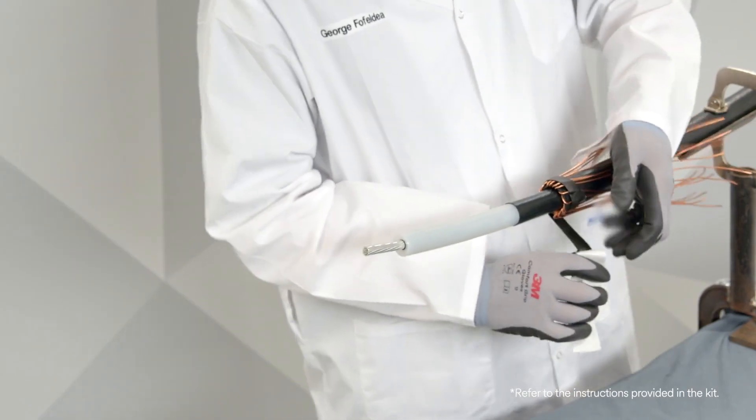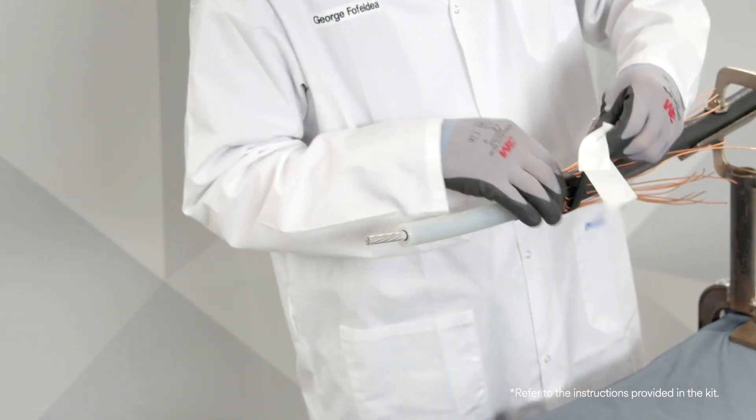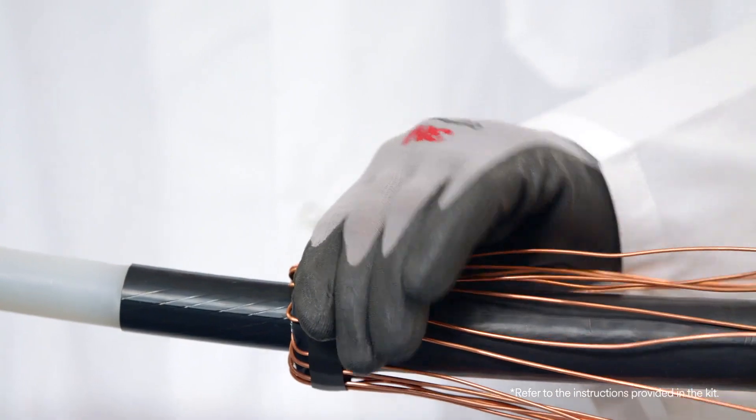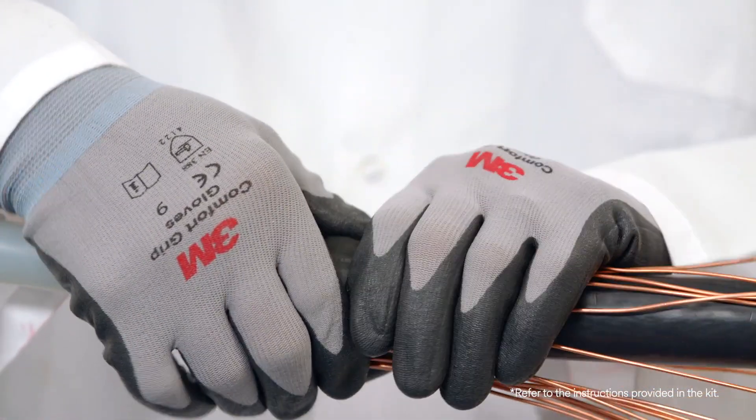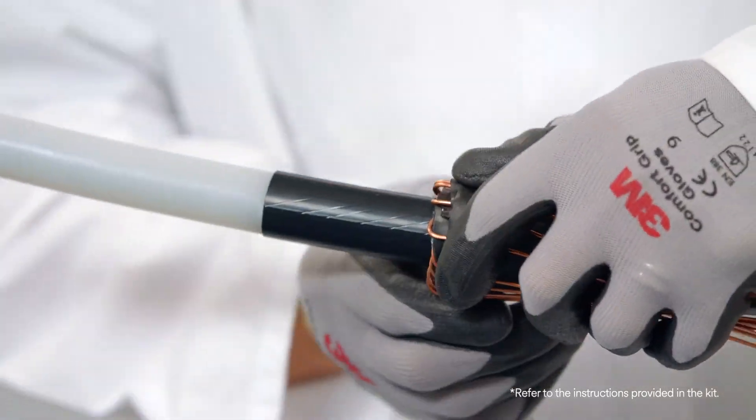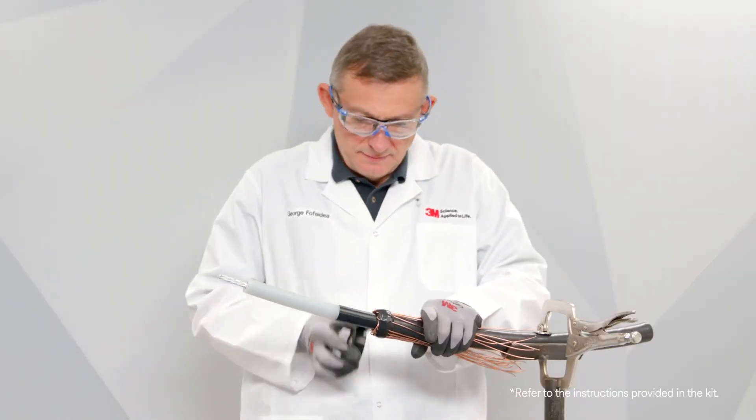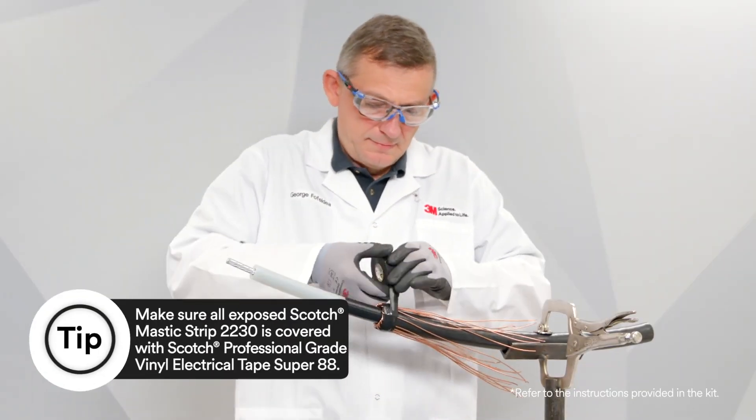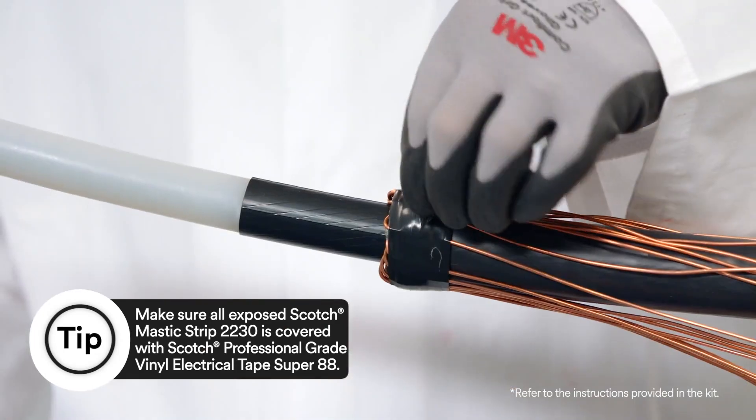Now apply a single wrap of the Scotch Mastic Strip 2230 over the neutral wires and then compress neutral wires into Scotch Mastic Strip 2230 by over wrapping seal strips with two highly stretched layers of Scotch professional grade vinyl electrical tape super 88.